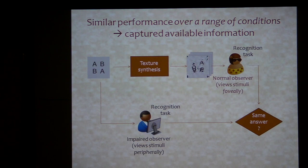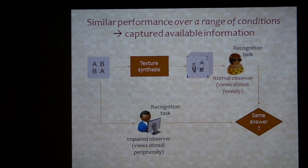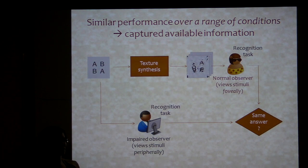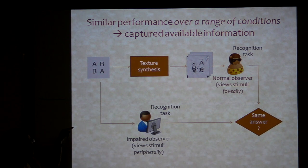In the task on the bottom, the observers see the stimuli in the periphery — so how would they get the statistics you are using at the top? One thing I should mention is that before we do the mongrels, we are actually blurring an appropriate amount for the periphery. That accounts for the peripheral blur. But then the blur is very modest — even at 14 degrees eccentricity it's not a big effect.